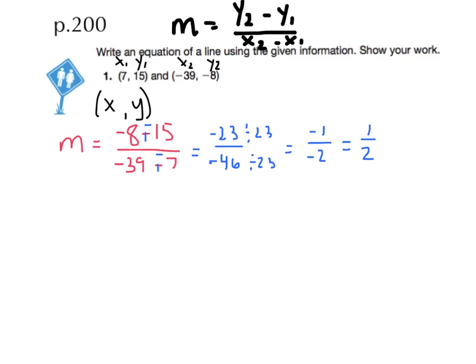Now that we know our slope is 1 half, we're going to take the slope and substitute that along with the x and y value from one of the ordered pairs into the y equals mx plus b formula. I'm going to choose the ordered pair 7, 15 because I would prefer to work with positive numbers. However, we could pick either of the two ordered pairs and it will still work. So my y value in the ordered pair is 15, my slope is 1 half times my x value, which is 7, plus b.